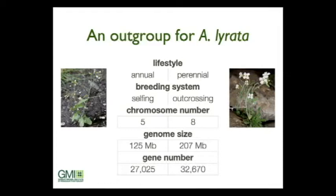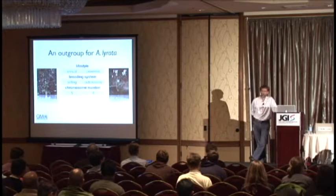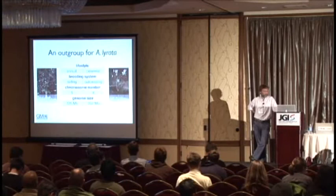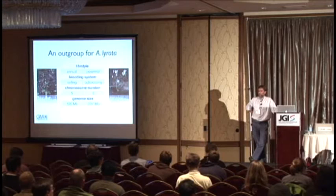Let me contrast them quickly. Lyrata is a perennial; thaliana is an annual. They have different breeding systems — thaliana is of course selfing, and lyrata is an obligate outcrosser. Different chromosome number: lyrata has the ancestral number of eight, thaliana has gone down to five. And they differ dramatically in genome size — lyrata is 207 megabases and thaliana is 125 megabases, a very small genome.